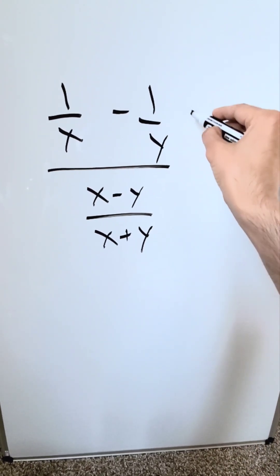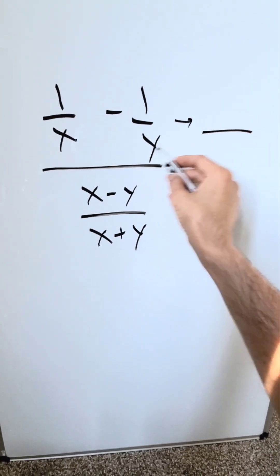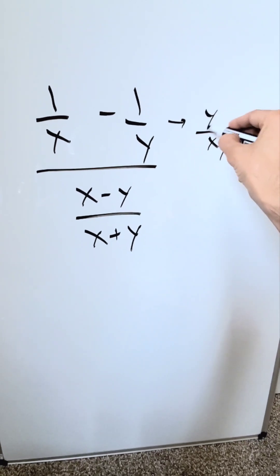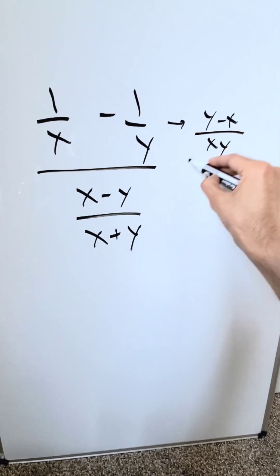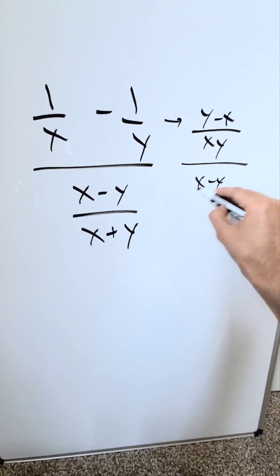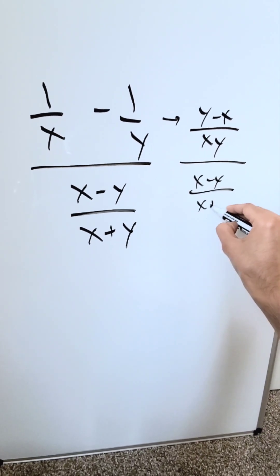Focus here only in the numerator. If I do a common denominator, I have xy, and I'll have y minus x. Then this is over x minus y over x plus y.